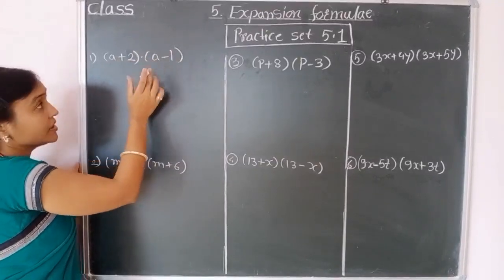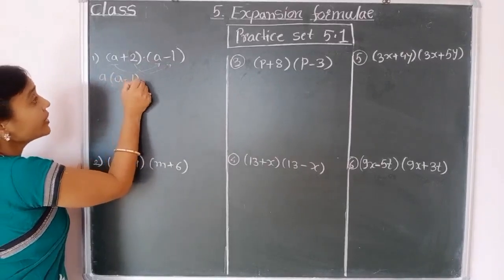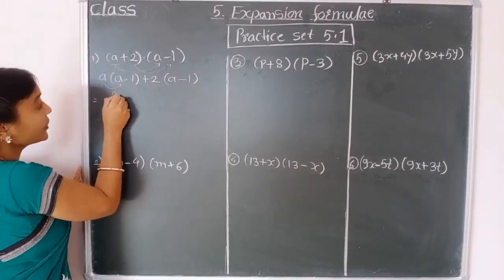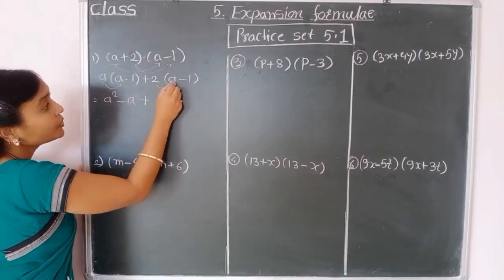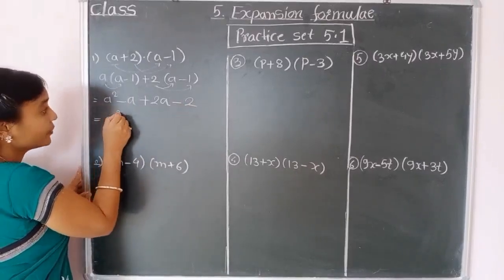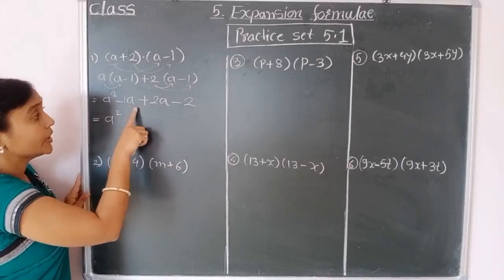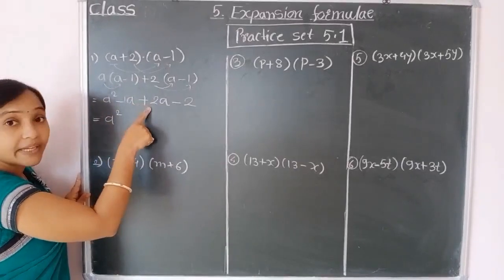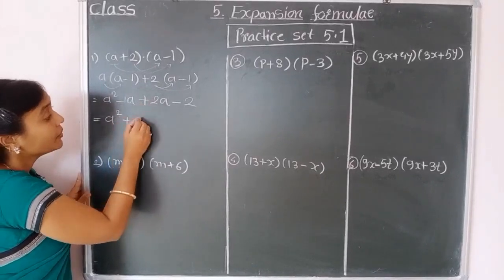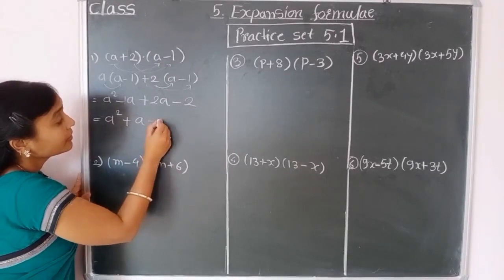Directly, this bracket multiplied into this bracket: a multiplied to this bracket plus 2 multiplied to this bracket. a into a minus 1 plus 2 into a minus 1. Then: a into a gives a squared, minus a into 1 gives a, plus 2 into a gives 2a, minus 2 into 1 gives 2. Now combining like terms: a squared, and minus a plus 2a gives plus a, minus 2. This is the expansion.